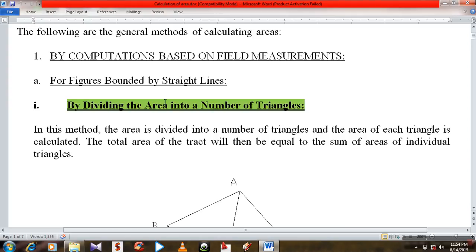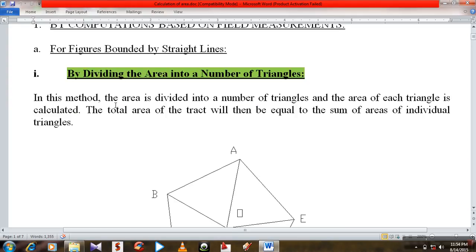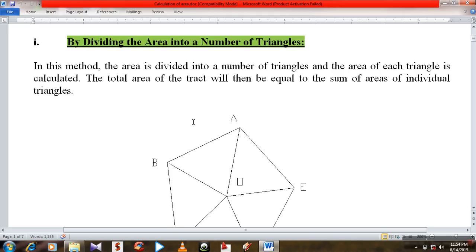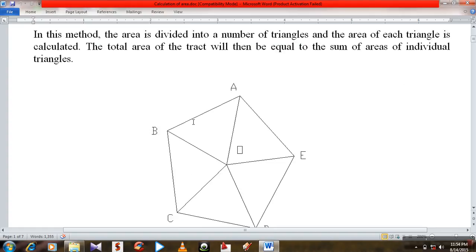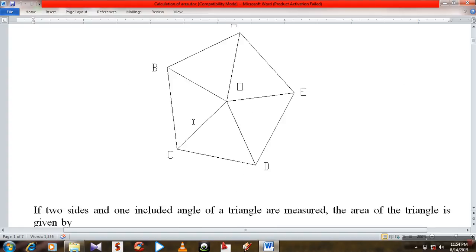First of all, by dividing the area into a number of triangles. In this method, the area is divided into a number of triangles and the area of each triangle is calculated. The total area of the tract will then be equal to the sum of the areas of individual triangles.